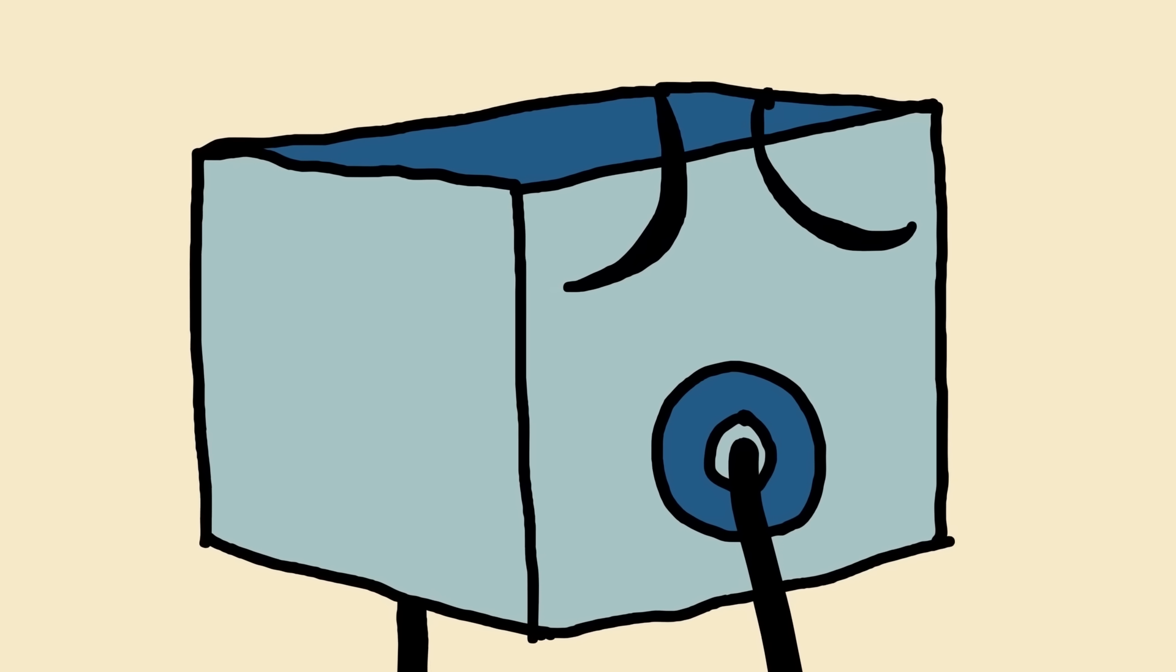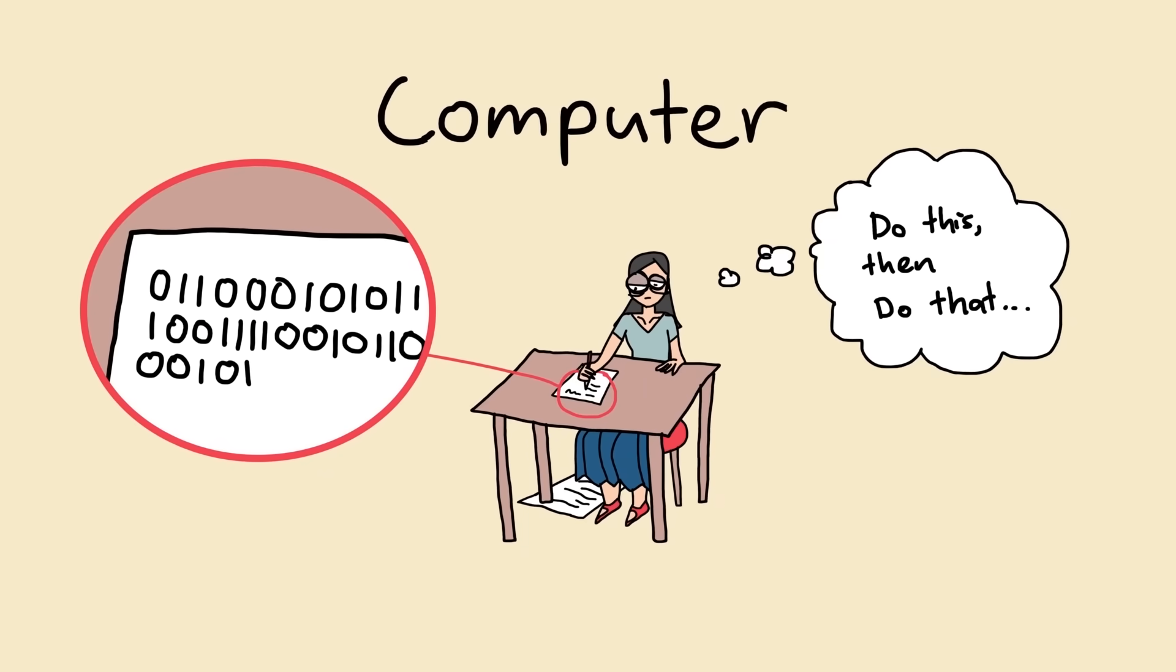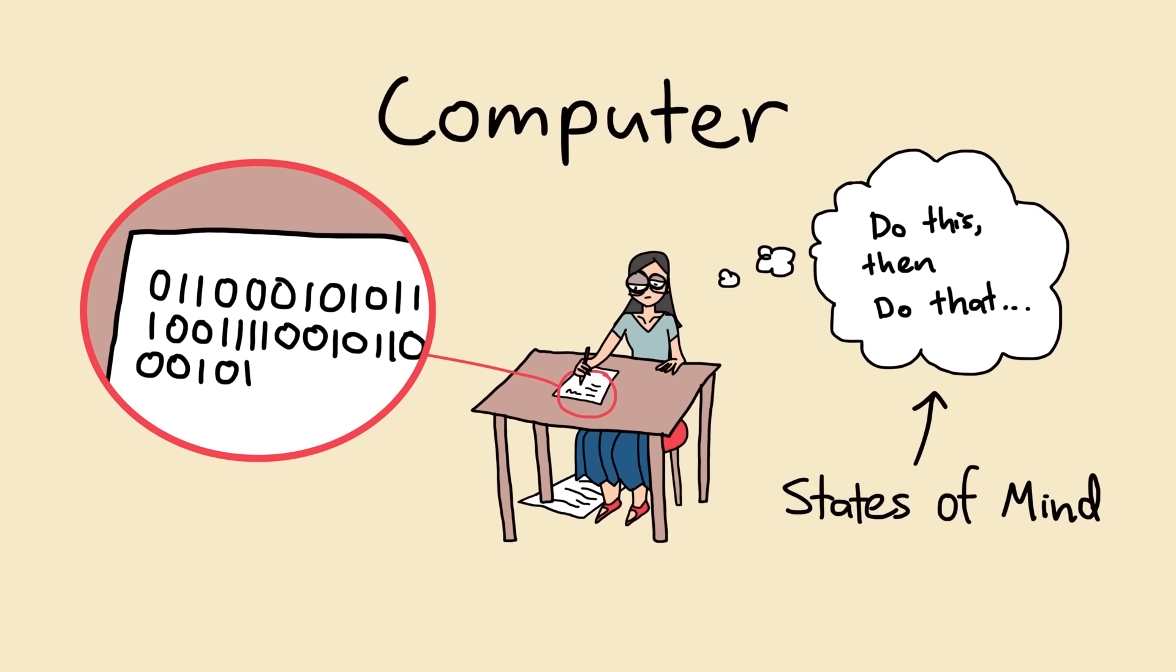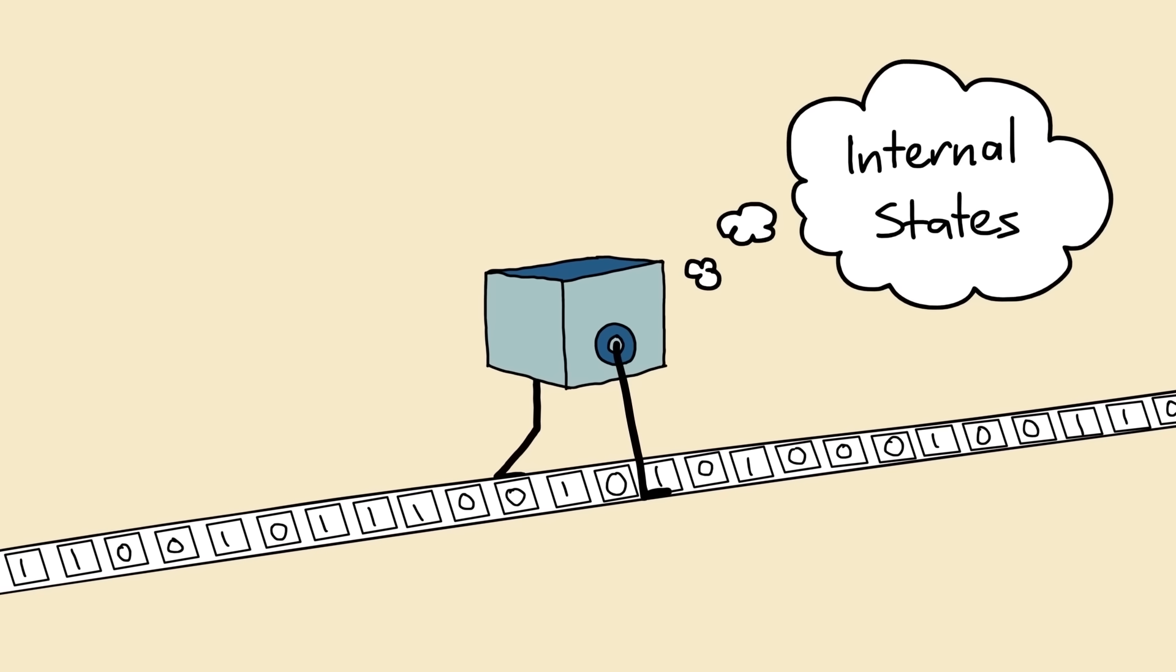But how does the machine know what to do? When a human reads a set of instructions, something is going on in their mind, which tells them what to do next. Turing thought of these as states of mind. And so similarly for his machines, he devised the idea of internal states, which tell the machine what to do. This idea is best understood using visual diagrams and an example.